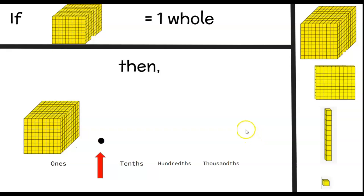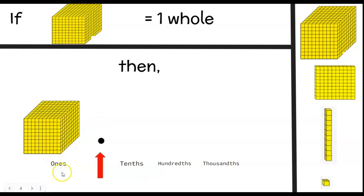Now let's move on to this scenario. Let's say I now want to use the thousandths block as my one whole — and I can do that. So if I use the one thousandths block as my one whole, then the thousandths block will represent one whole. Then I simply divide: what is one thousand divided by ten? Because the tenths is ten times smaller than the ones place, that gives me my one hundredths flat.